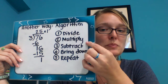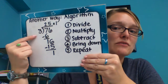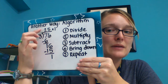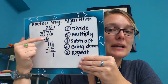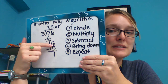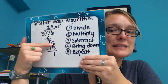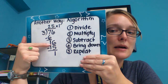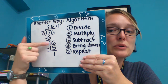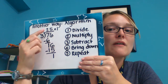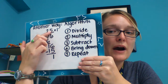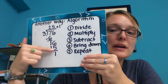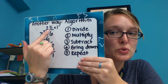Divide 3 into 7 — we get 2. 3 times 2 is 6. 7 minus 6 is 1. Bring down the 6. Now 3 goes into 16 — we're going into this bottom number, not into the 6 by itself. We go into the 16, the number we've just created by subtraction. So 3 goes into 16 five times. 3 times 5 is 15. 16 take away 15 is 1. 3 can't go into 1 — that's my remainder. So I get 25, remainder 1.